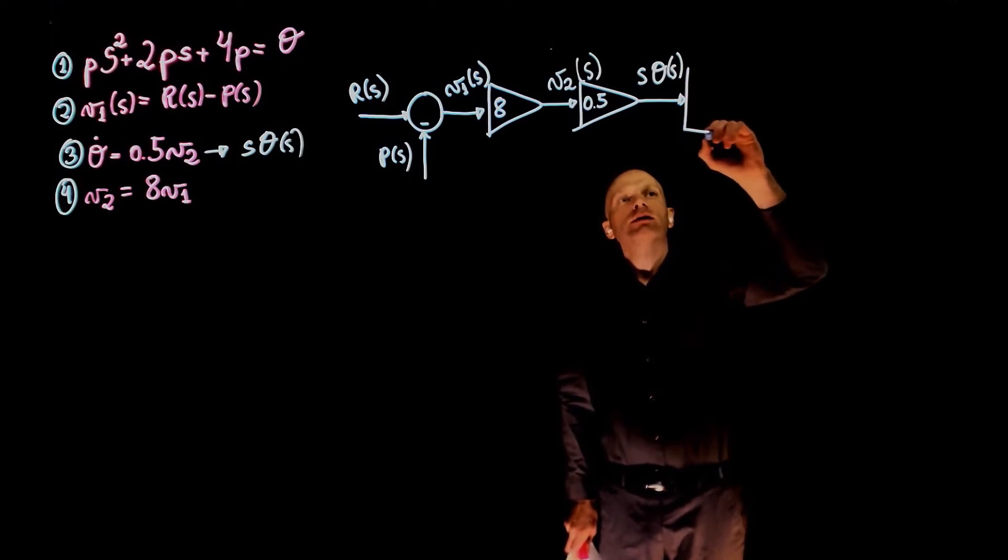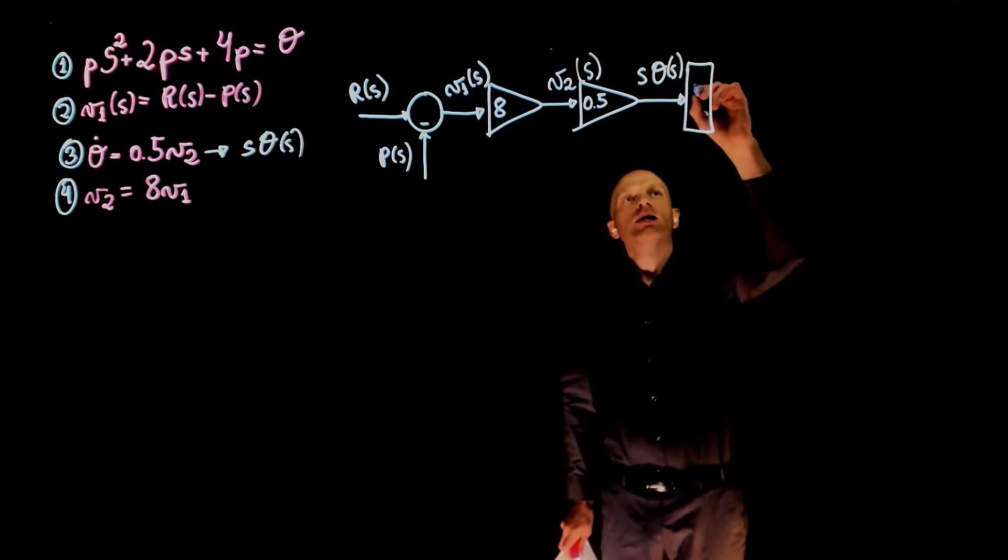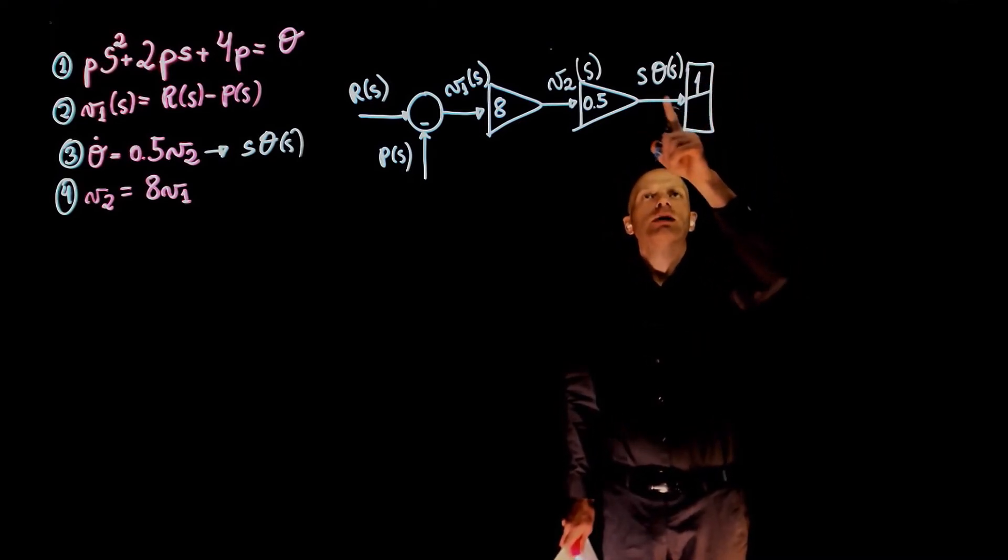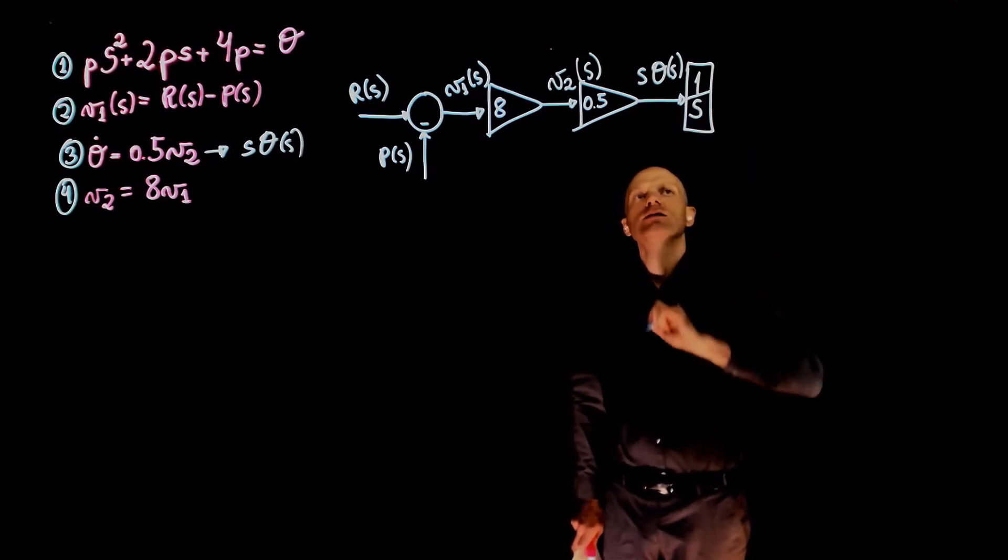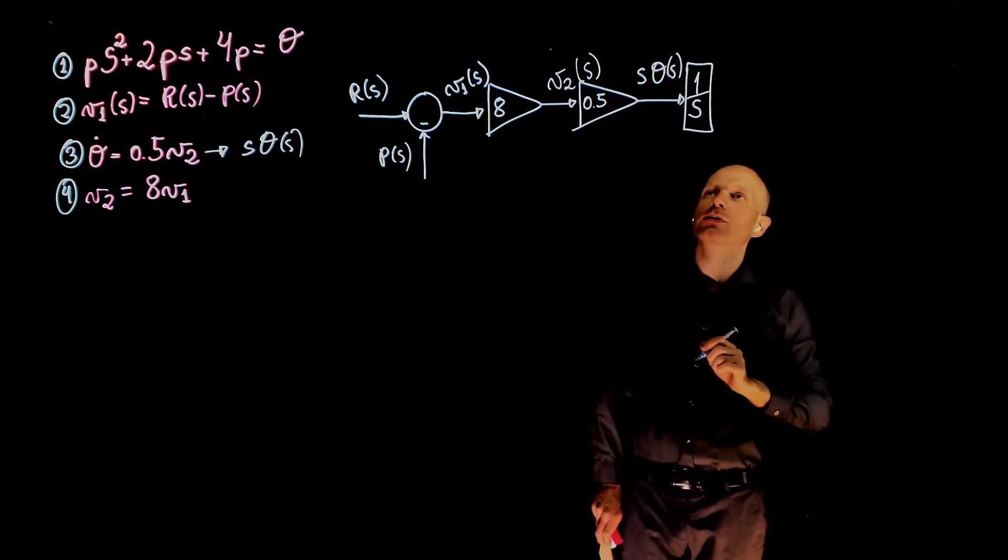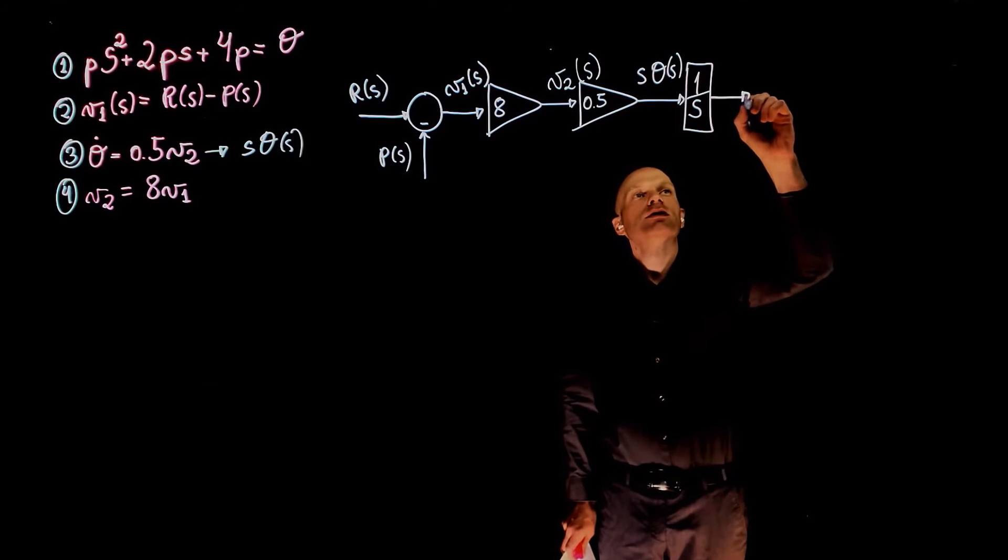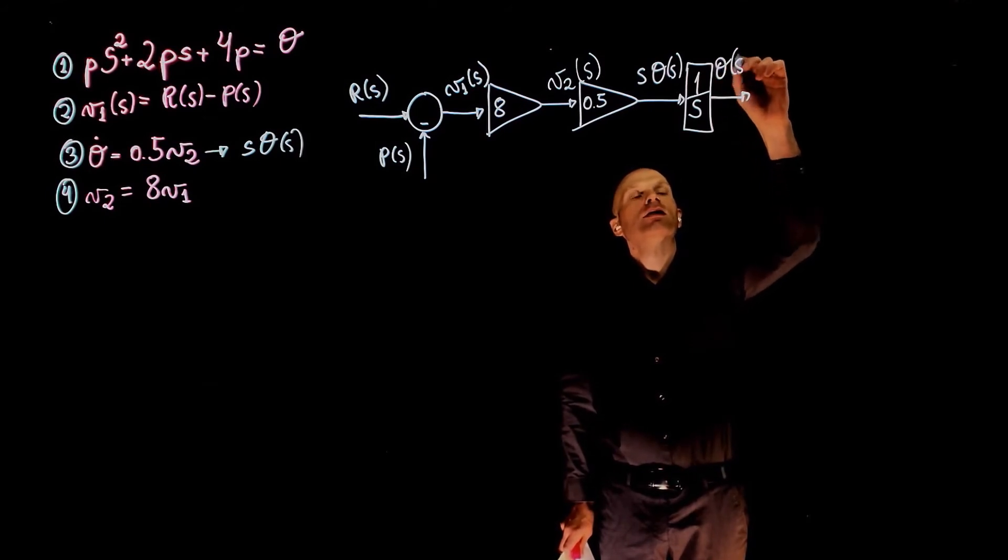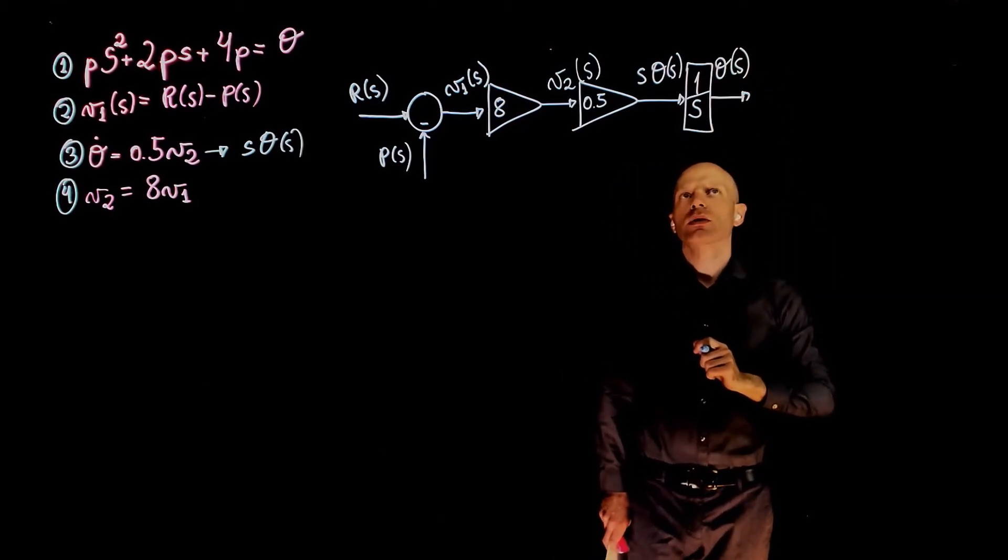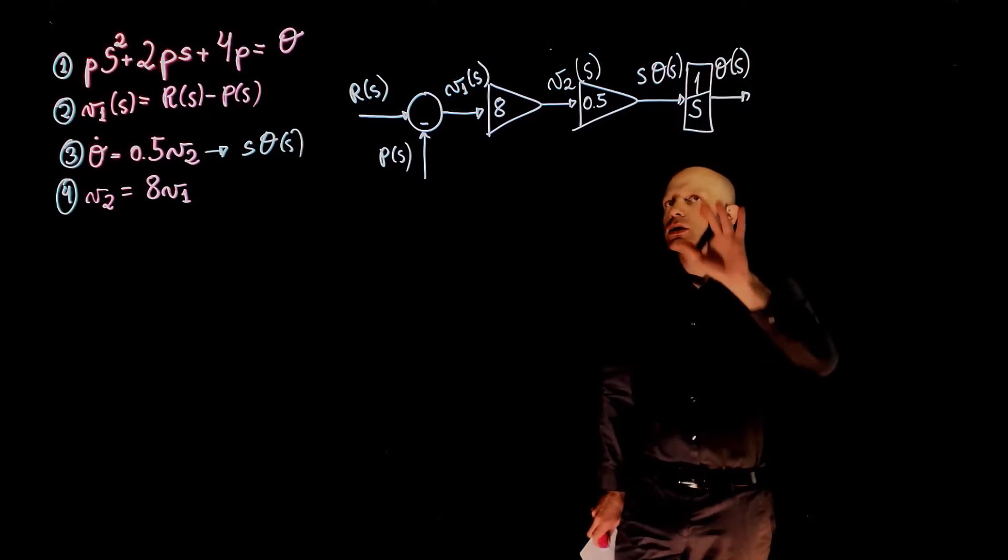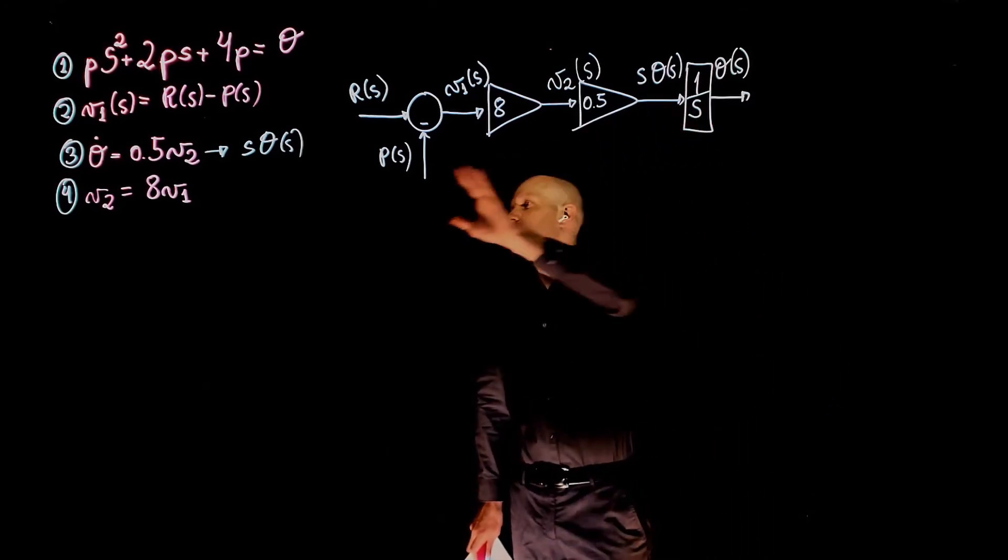If you integrate this equation, that is, we multiply this variable by 1 over s, which represents the integral in the frequency domain, this gives theta of s. Now this whole thing represents equation 3.